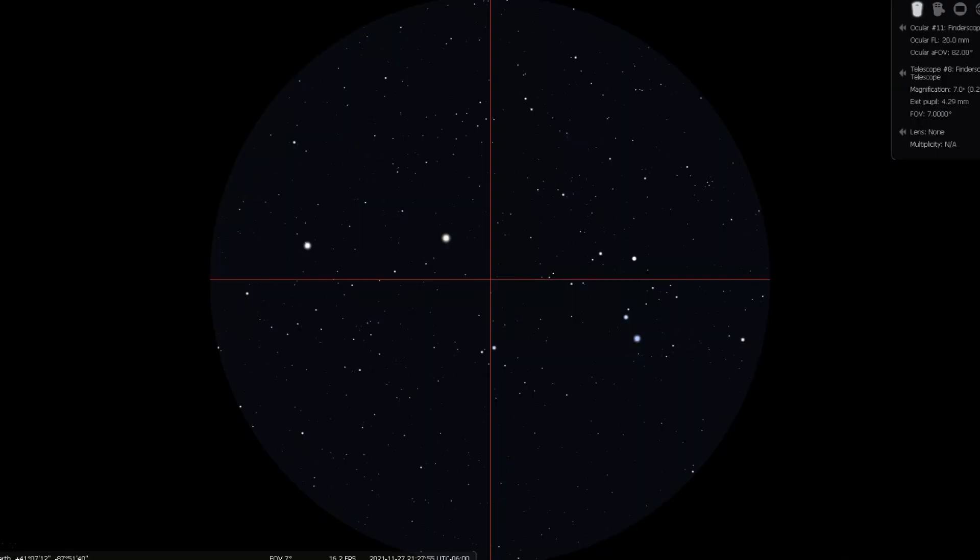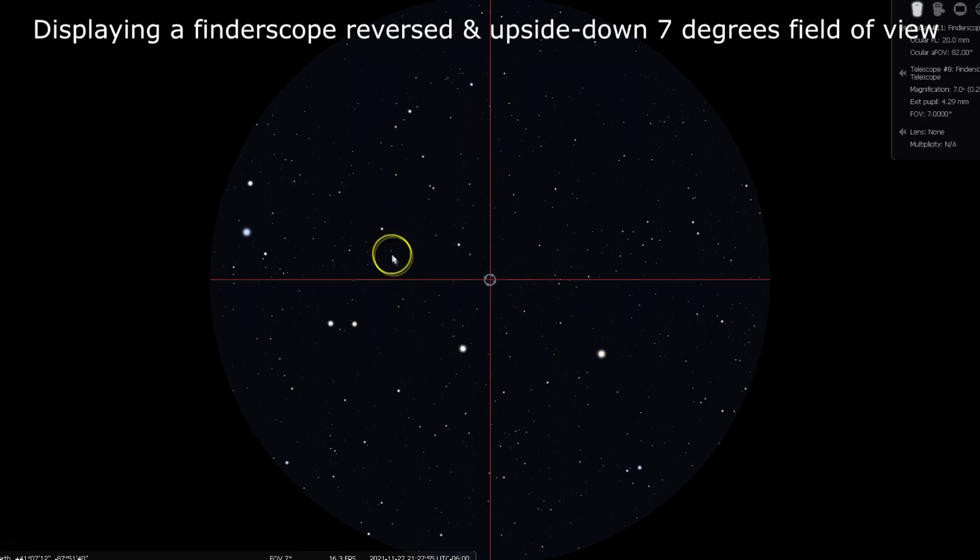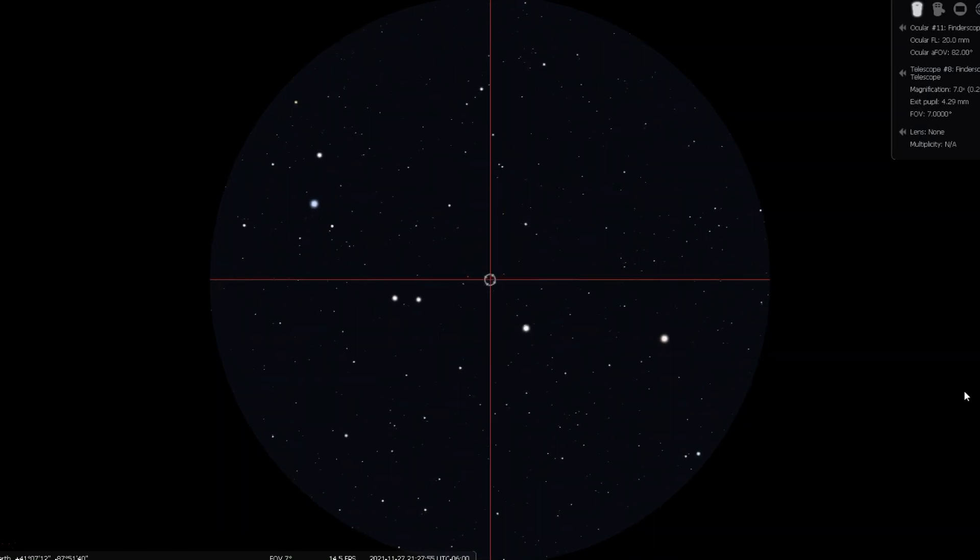With a magnified finderscope, center the star Shadar in your wider field of view, and prepare to move it so that both Shadar and Navi are contained within the field, somewhat like this. They are less than 5 degrees apart, so both should fit within a typical 7 degrees finderscope field of view, like this.